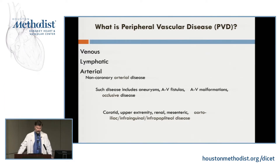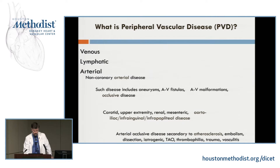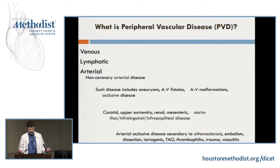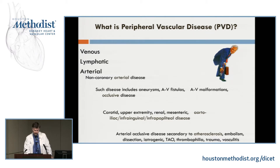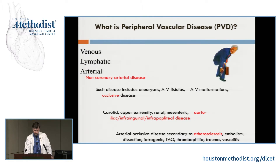Arterial occlusive disease can come in different flavors: carotid, upper extremity, renal mesenteric. We're going to be talking about aortoiliac, infrainguinal, and infrapopliteal arterial occlusive disease today. That disease can be due to many things — atherosclerosis, which is our focus, but also embolism, dissection, catheter accidents, thromboangiitis obliterans, thrombophilia, trauma, and vasculitis. Our focus today will be non-coronary arterial disease, occlusive, affecting the aortoiliac and vessels below the inguinal ligament, due to atherosclerosis.